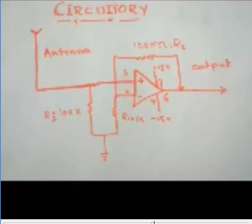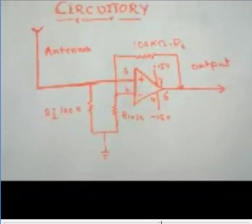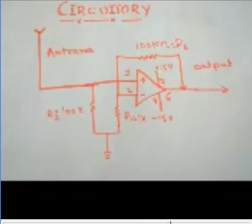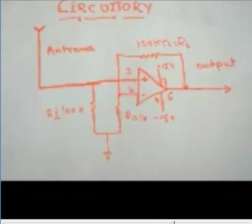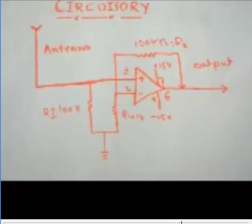Now connect a feedback resistor of 100 kiloohm at the inverting terminal. Its one end should be connected to the output of the op-amp which is pin number 6.